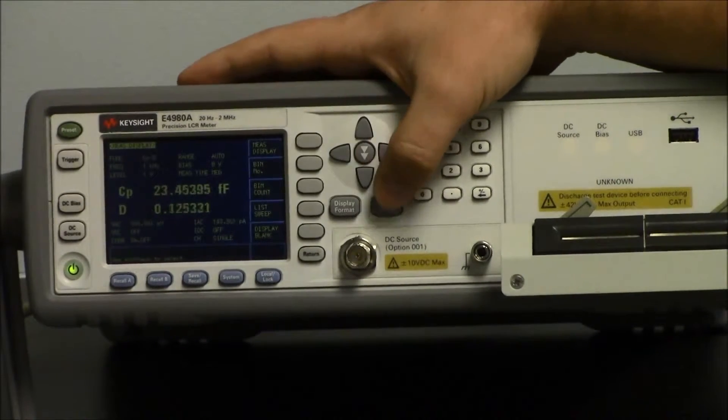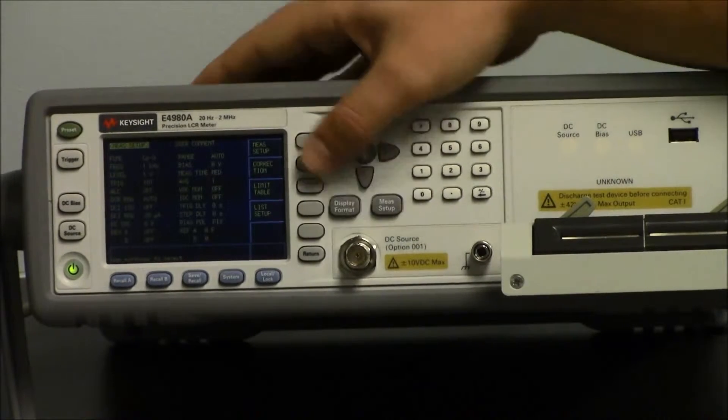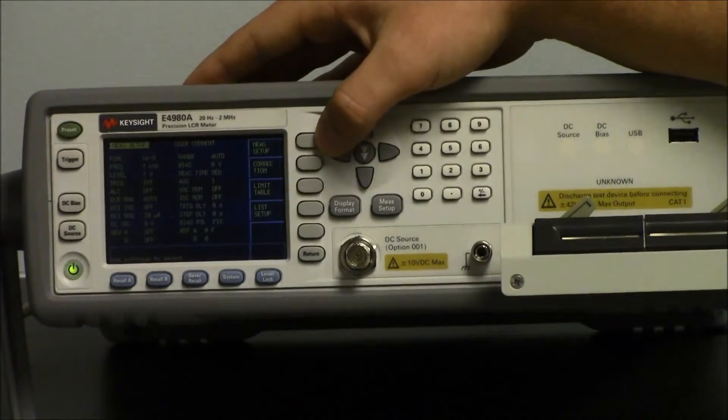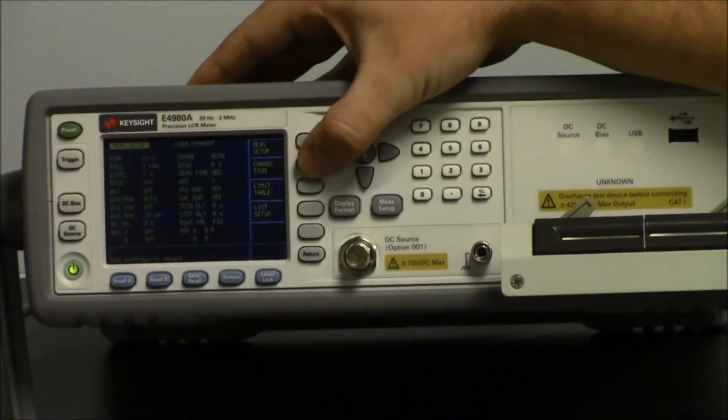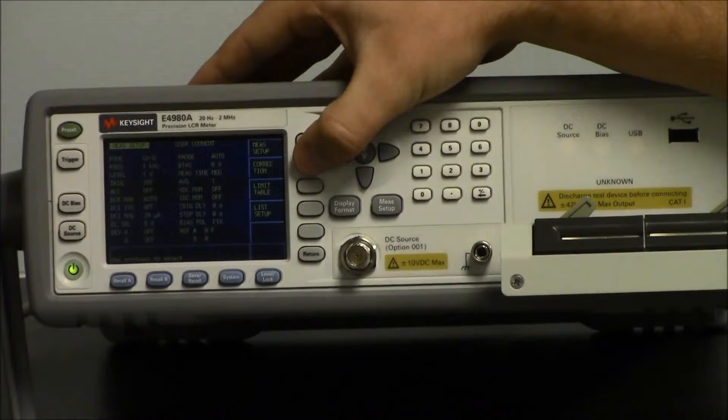First thing we need to do, hit the measure setup button. Now, it's a little hard to see, but there is a correction soft key on the right hand side of the screen. Hit this button.